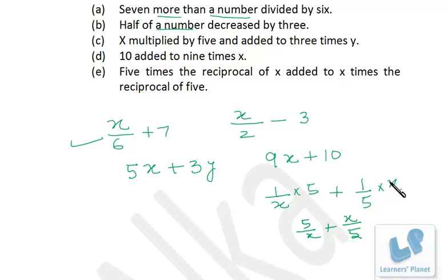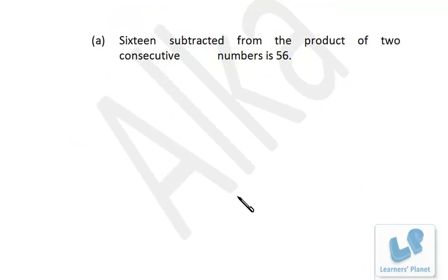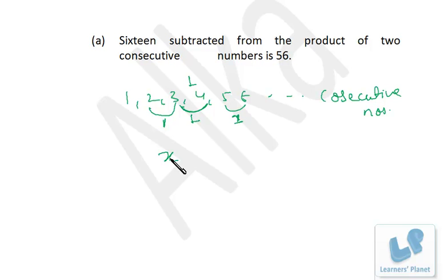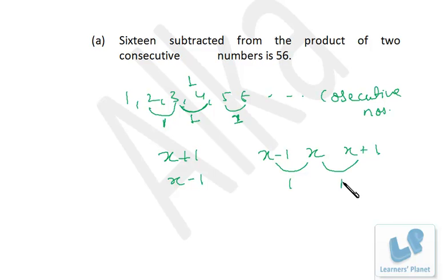Now I'm sure you're getting how to frame an algebraic expression from a verbal expression. Let's understand the concept of consecutive numbers. 1, 2, 3, 4, 5 are all consecutive numbers. The difference between two consecutive numbers is always 1. So if a number is x, the consecutive numbers are x − 1, x, and x + 1. The difference between each pair is 1.